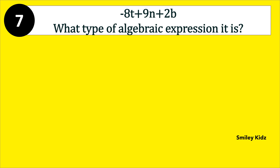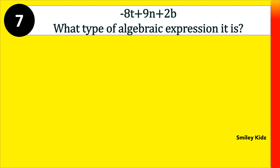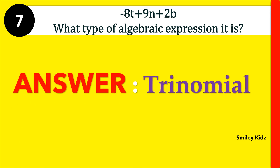Moving to question number 7. Minus 8t plus 9n plus 2b — what type of algebraic expression is it? The right answer is trinomial. An algebraic expression that has 3 terms is called a trinomial.